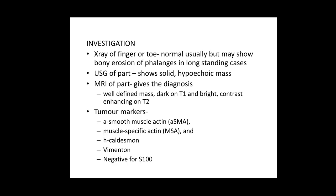The investigation always begins with an x-ray of the finger or the toe, which are usually normal. But in long-standing glomus tumours, there can be bony erosion of the phalanges. An ultrasound may reveal a solid hypoechoic mass. MRI is the investigation that gives the diagnosis — a well-defined mass which is dark on T1 imaging and bright contrast-enhancing on T2 imaging. Tumour markers positive for glomus tumour include SMA (smooth muscle actin), MSA (muscle specific actin), H-caldesmon, and vimentin. It is usually negative for S100.